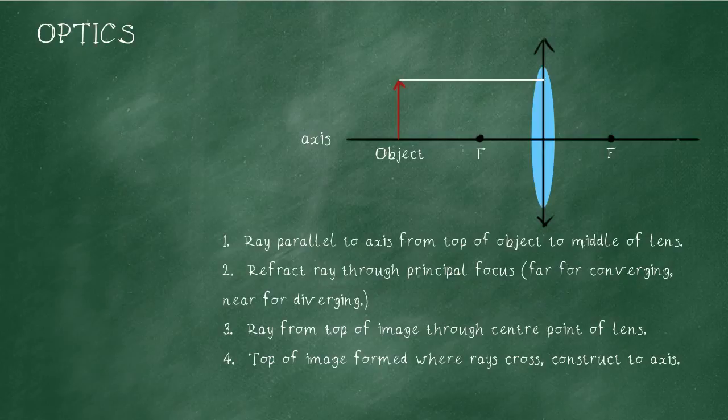Then, step two, we refract that ray through the principal focus. We use the far focus for the converging type lens and the near focus for the diverging type lens. We know this is a converging type lens because the arrows point outwards and the shape of the lens is that convex shape. So I refract that ray through the principal focus. And I simply keep that ray going as far as the bit of graph paper I've been given will allow me. That's step two.